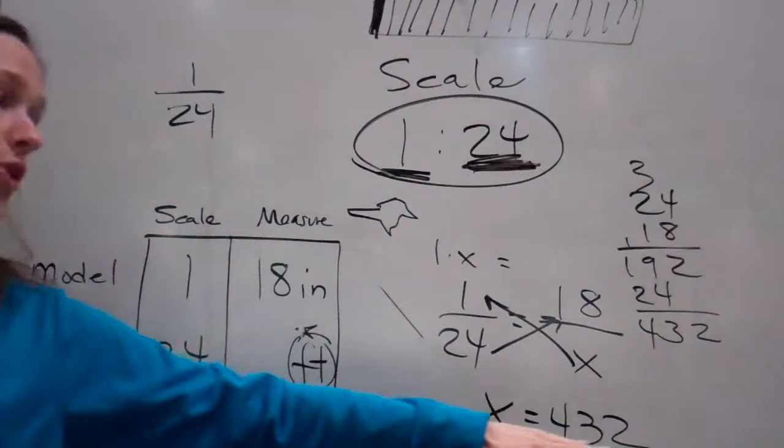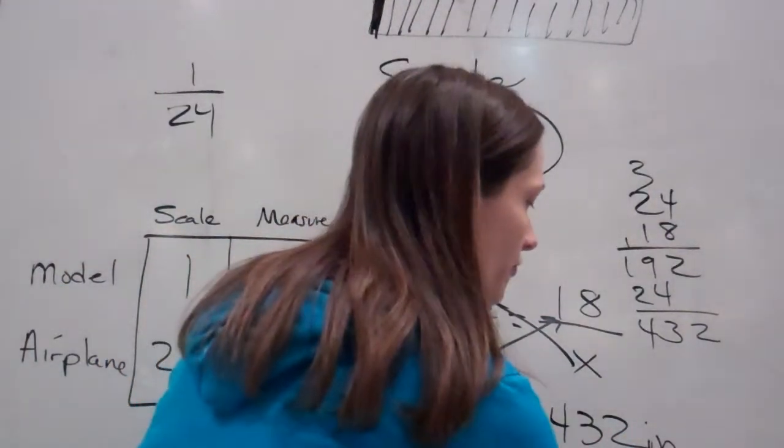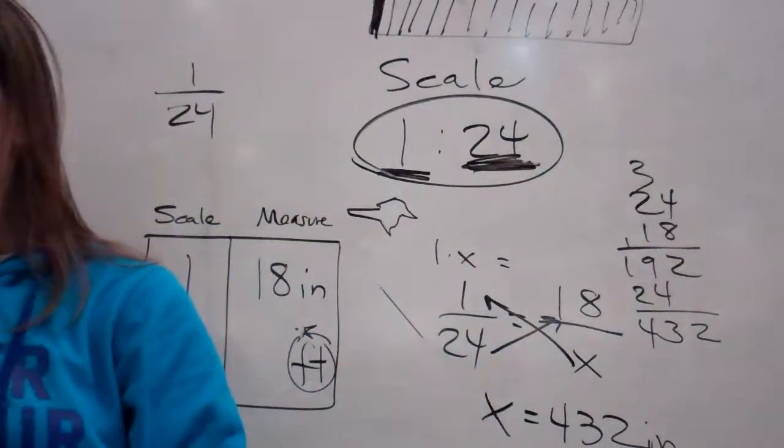So now I'm going to convert my 432 inches into feet. Does anybody know how to do that? Divide by 12. You're going to divide by 12.